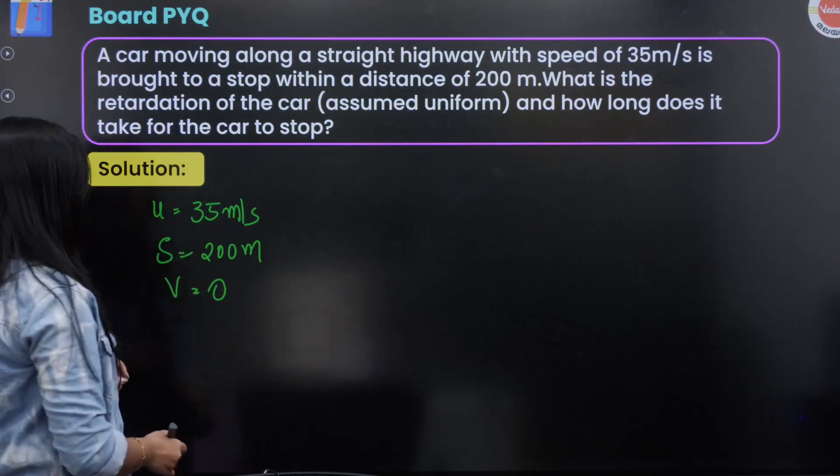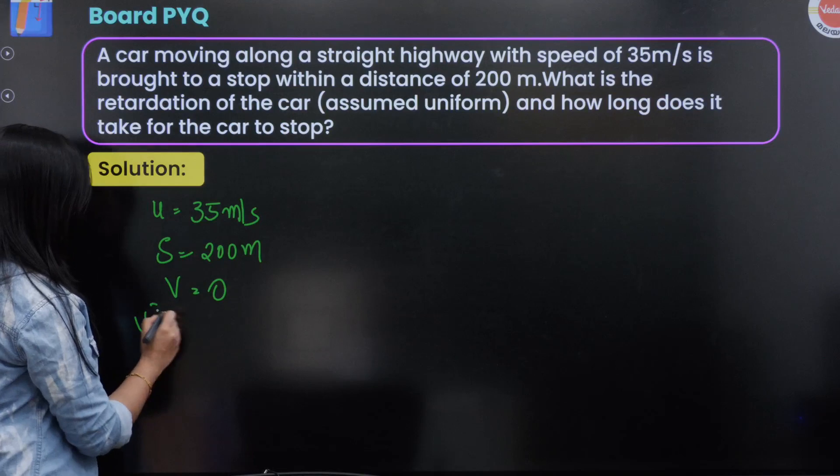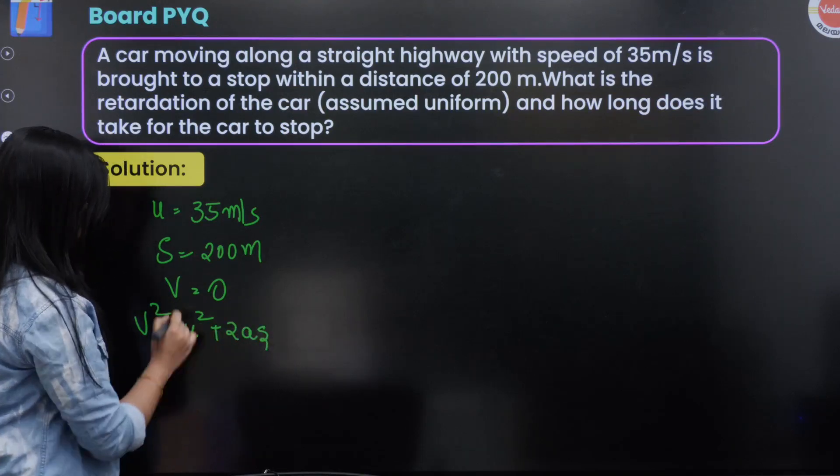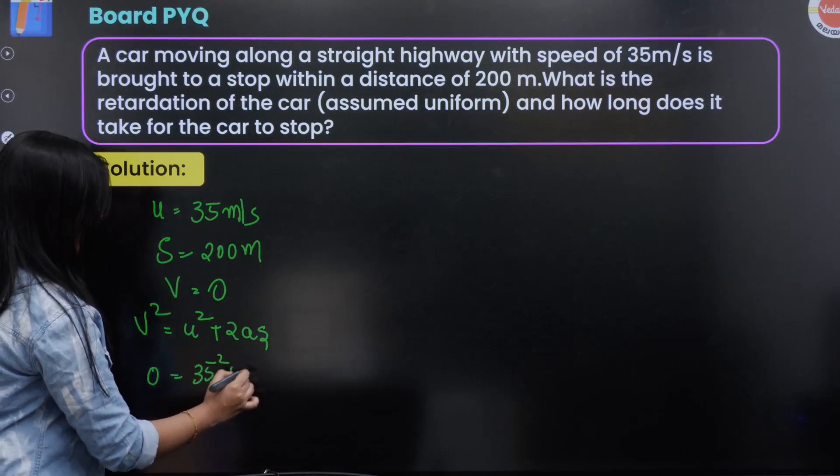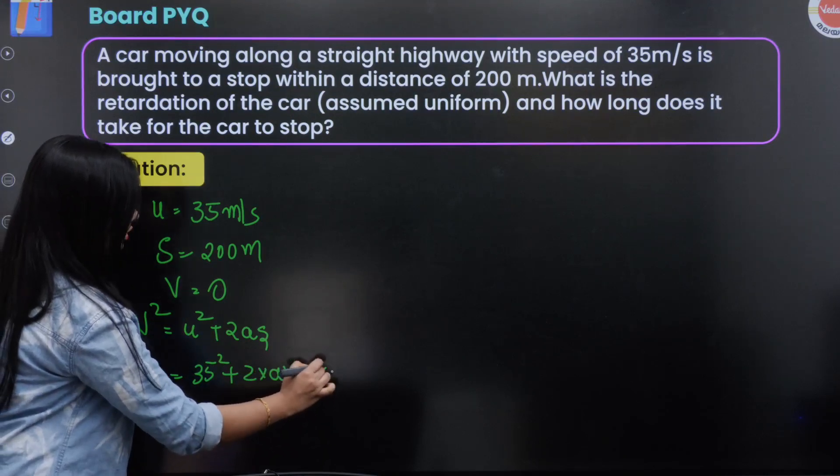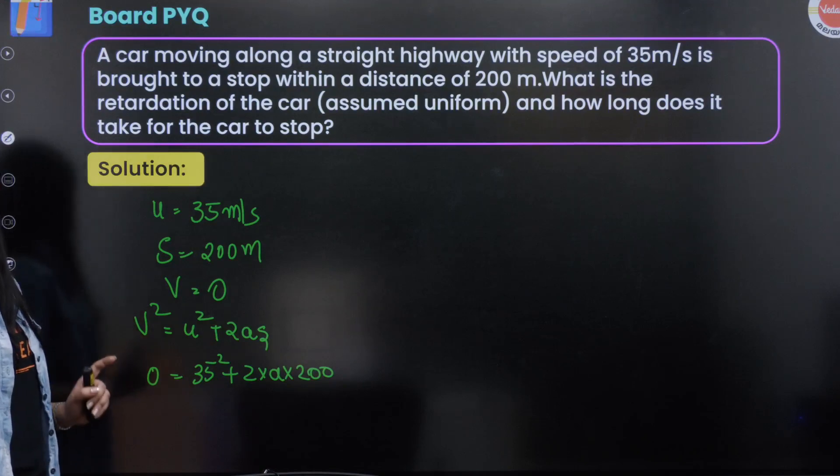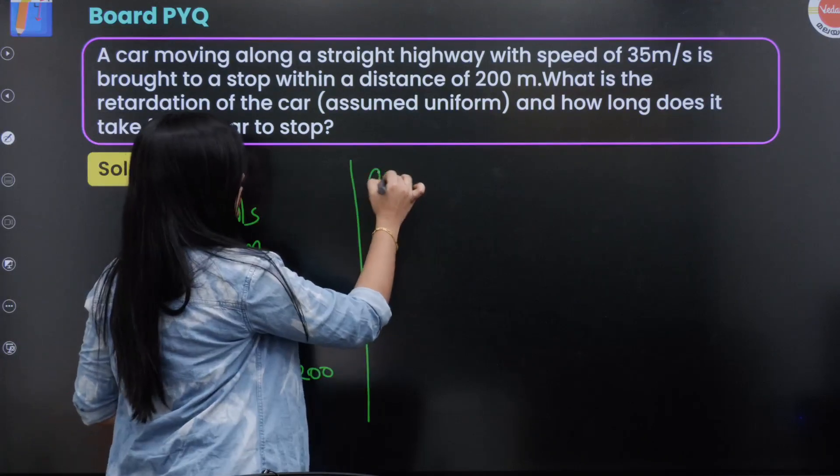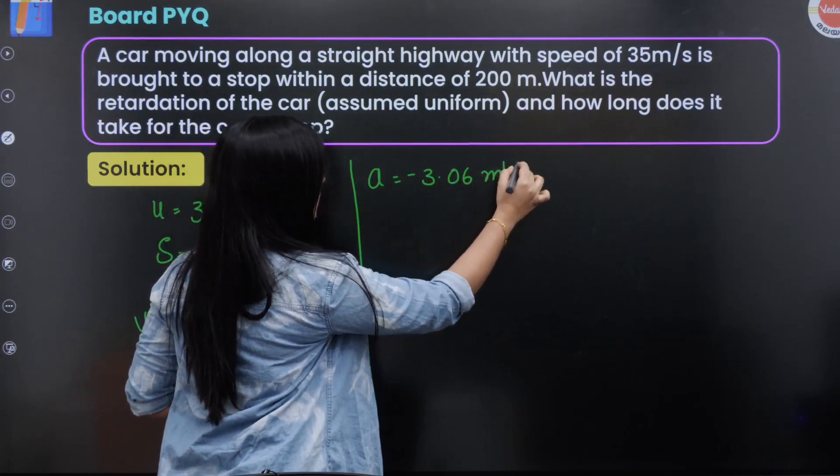To find the retardation, we use the equation v² = u² + 2as. Substituting the values: 0 = 35² + 2 × a × 200. Solving for acceleration, we get the retardation as -3.06 meters per second squared.